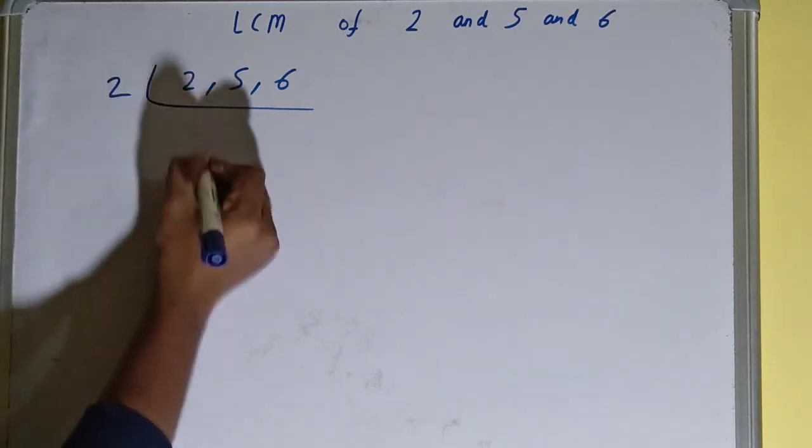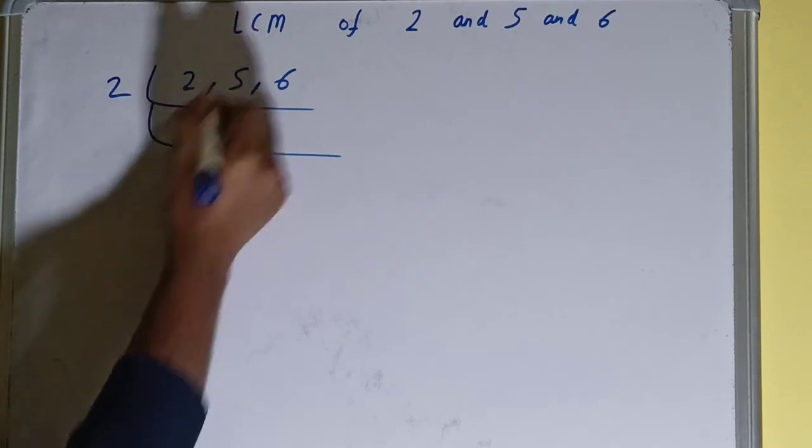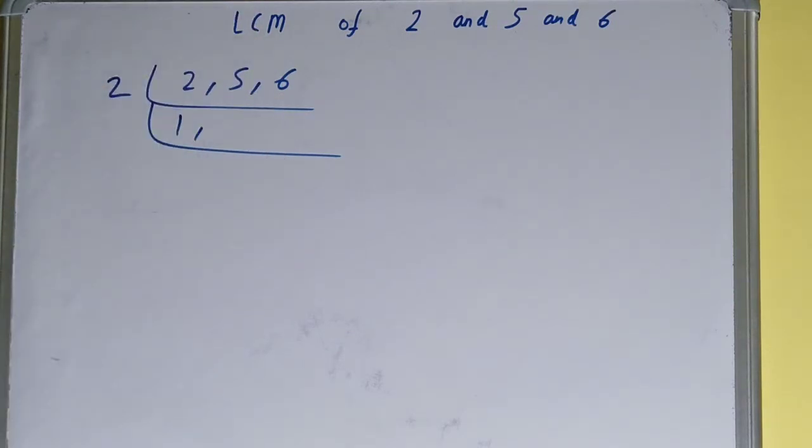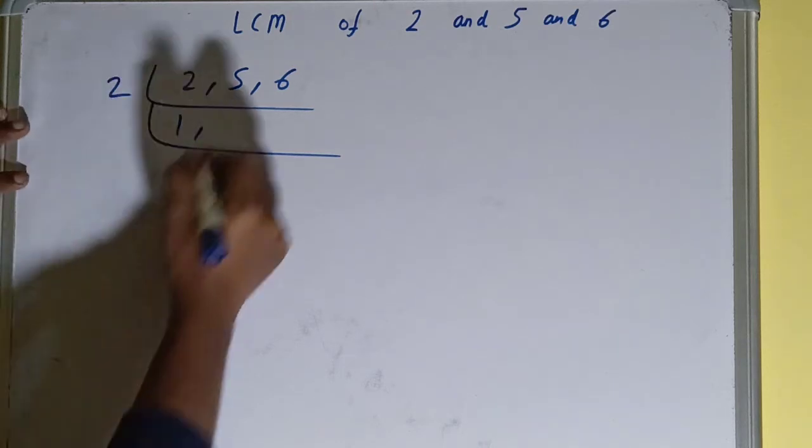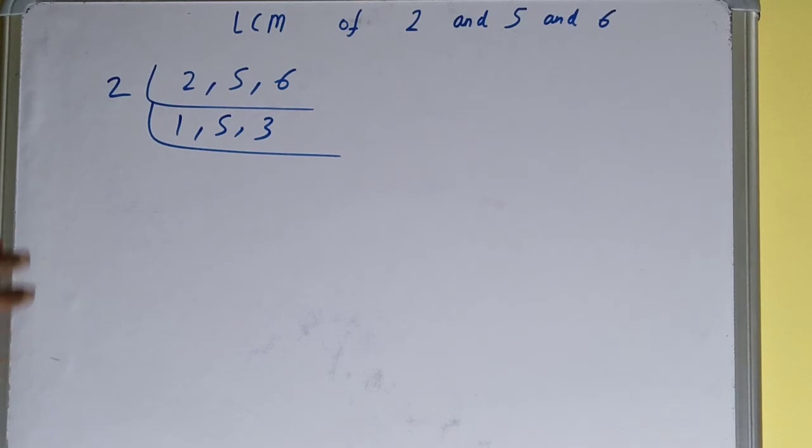So we'll write 2 here, and for this 2 we'll be getting 1. This 5 is not divisible, so we'll just copy it down. And this 6 is divisible, we'll be getting 3. Again check, is any of the numbers divisible by 2? None of the numbers is divisible.